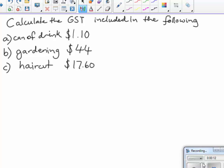I'm going to show you how to calculate GST for these three examples. The really simple way to calculate GST, because GST equals 10% of the selling price, is simply to divide by 11.